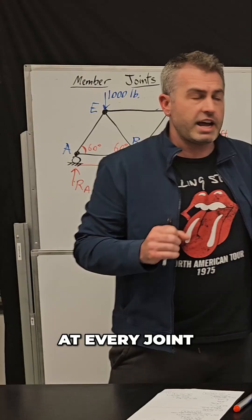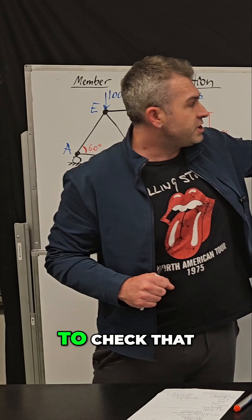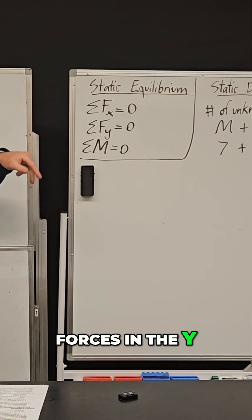How many knowns do we have? At every joint, when we start analyzing these joints later, we'll be able to check that the sum of the forces in the X is zero and that the sum of the forces in the Y is zero. So because we have two equations at each joint,